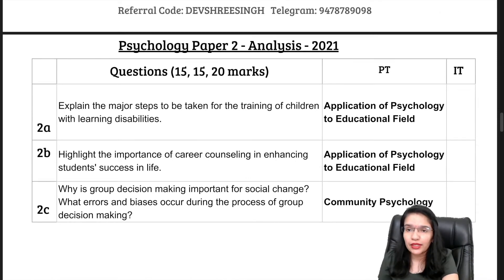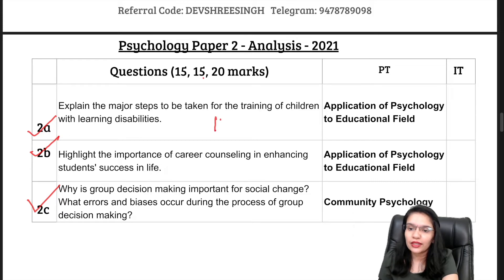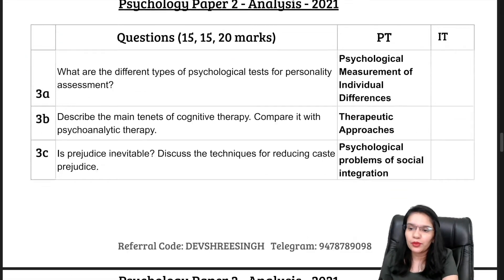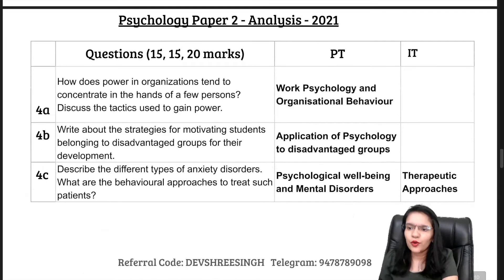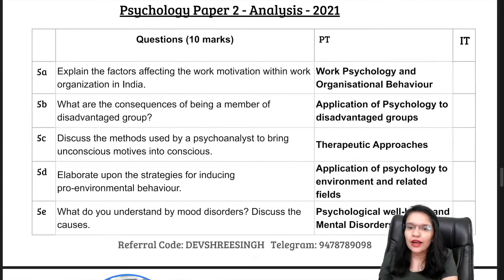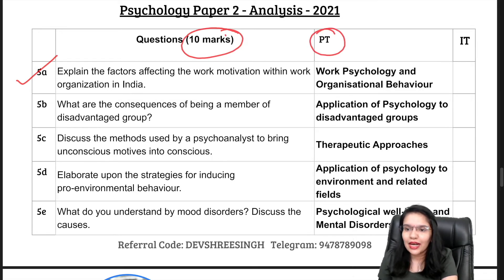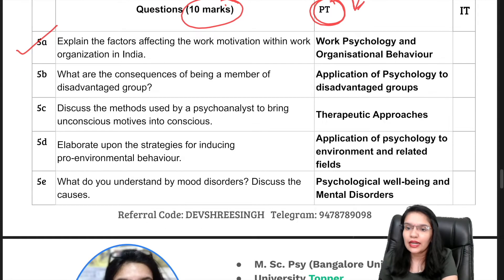Questions 2 to 4 are optional category questions. There are 3 sub-parts and you have to write all of them. The marks are divided as 15, 15, and 20. In Paper 1 it was 20, 15, and 15; here it is 15, 15, and 20. In Question 2 and 3, there is no interconnected tag. In Question 4, there is one interconnected tag. You can pause the video and read this. In Question 5, there are still 5 questions of 10 marks each, and all of them have only primary tags — there is no interconnected tag as such.